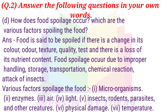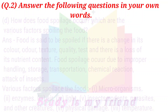d. How does food spoilage occur? Which are the various factors that spoil food? Food is said to be spoiled if there is a change in its color, odor, texture, quality, taste, and there is a loss of its nutrient content. Food spoilage occurs due to improper handling, storage, transportation, chemical reaction, and attack of insects. Various factors that spoil food: 1. Microorganisms, 2. Enzymes, 3. Air, 4. Light, 5. Insects, rodents, parasites and other creatures, 6. Physical damage, 7. Temperature.